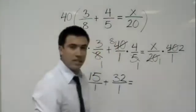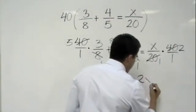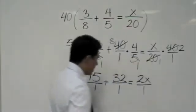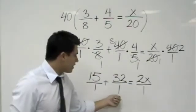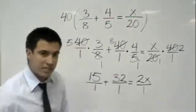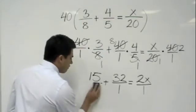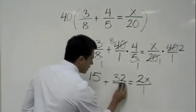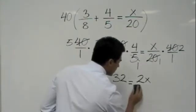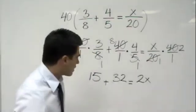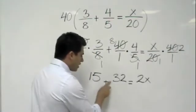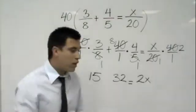So, it would be x over 1 times 2 over 1. That would give me 2x over 1. And if you notice here, everything is under 1, right? So, isn't that just the same thing as saying 15 plus 32 equals 2x? Yes, you're correct. So, you can go ahead and do that. And what do we do? We just eliminated the denominators.